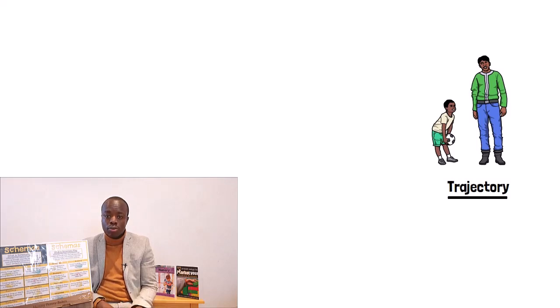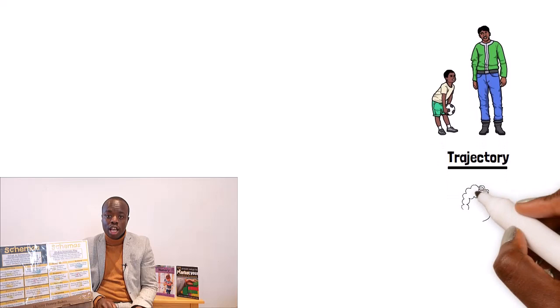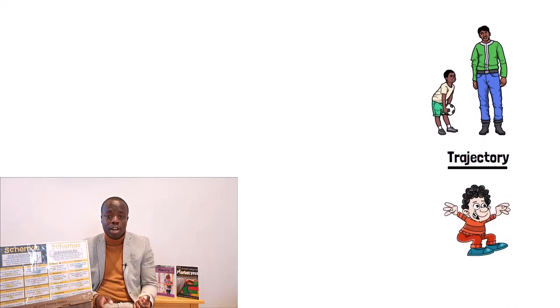Or they may repeatedly climb and then jump off things, or even just repeatedly kick randomly or kick objects. With trajectory, children will be experimenting with space and how movements occur.